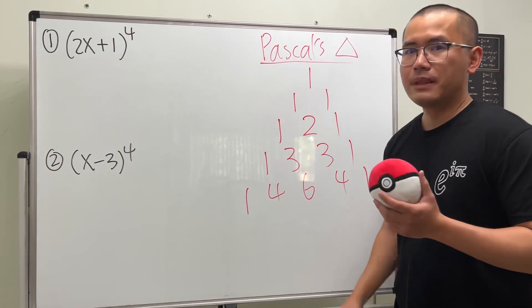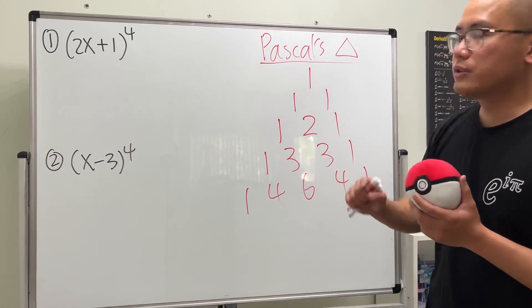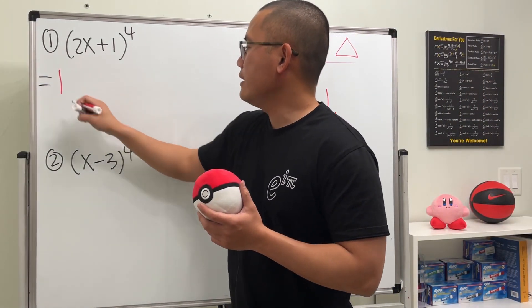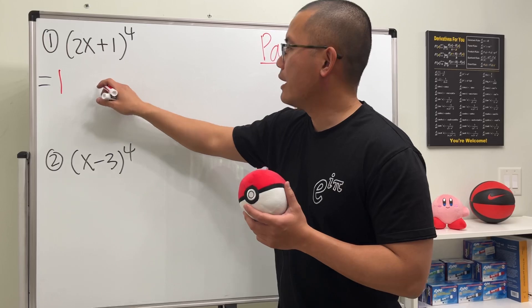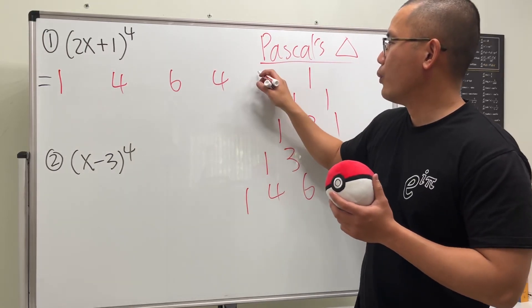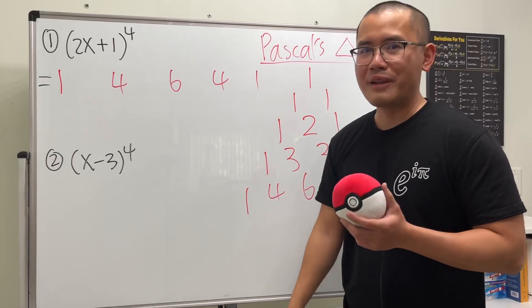How are we going to use this then? These are the coefficients. I'm just going to write them down for you guys. Here we get, this is one. And there's some gap. One. And then we have four, six, four, one. That should be okay.